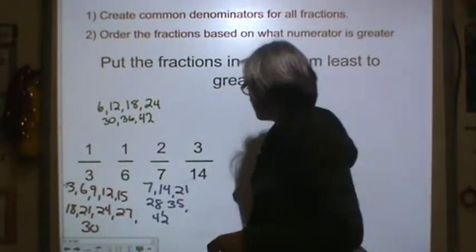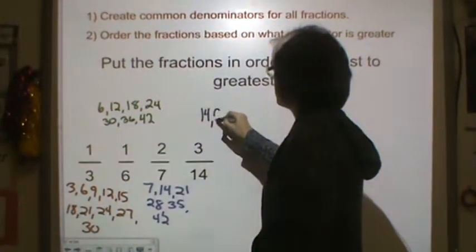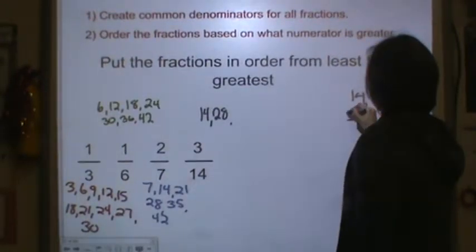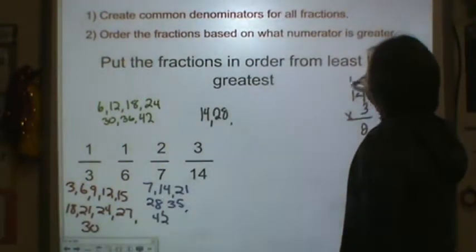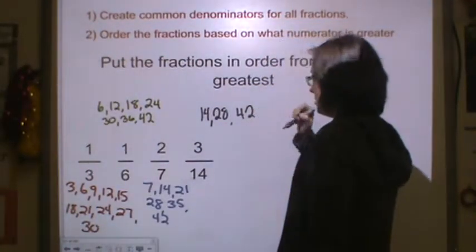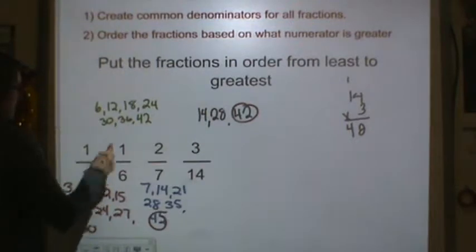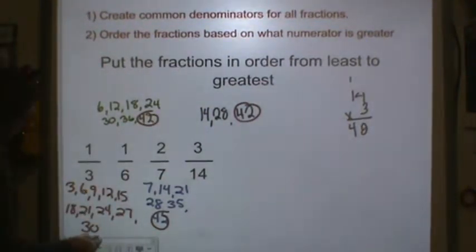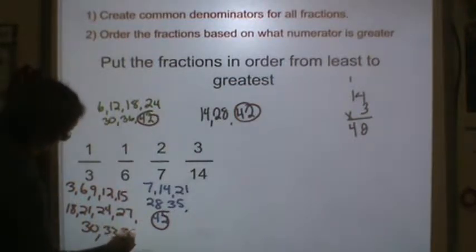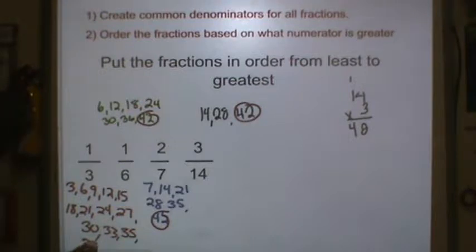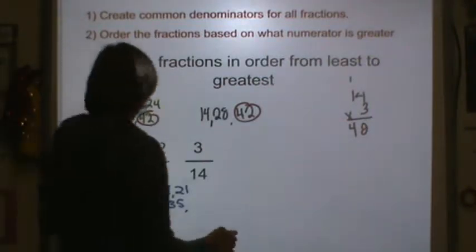And then 14: 14, 28, 42. So it looks like 42 is going to be the number we're going to have to use. So I need to keep on going with my 3s: 33, 36, 39, and then 42. So I now need to convert all of these so that they have a denominator of 42 because that's what's common between all of these numbers.